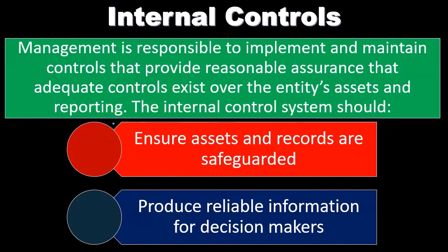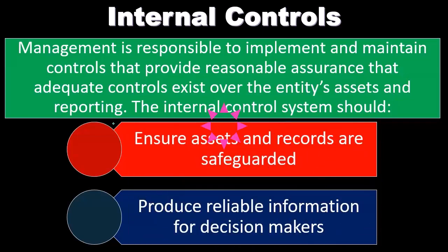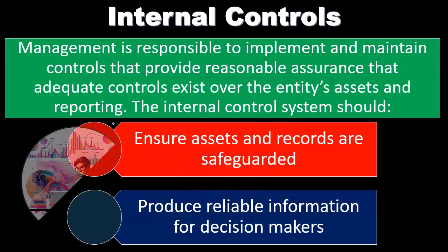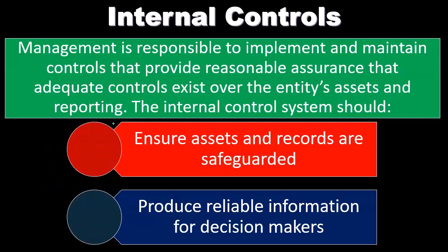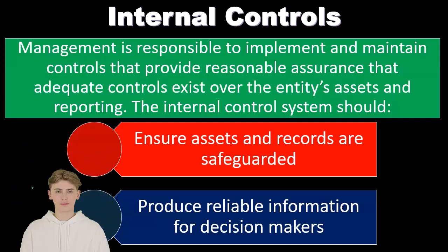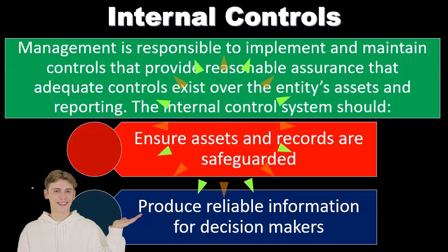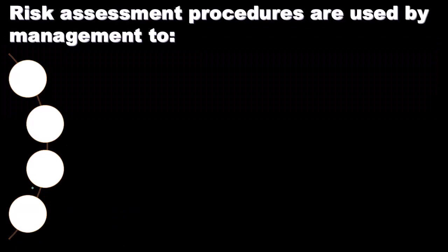You can think of internal controls as a kind of bureaucratic system. As an entity grows in size, they're going to need more checks and balances — more internal controls — in order to assure more reliability over the assets the company possesses, as well as the reporting. We as the auditor will take a look at those internal controls, test them, and see whether or not we can rely on them as part of our auditing, thereby testing controls rather than having to do as much substantive testing as we would if there were little to no internal controls.